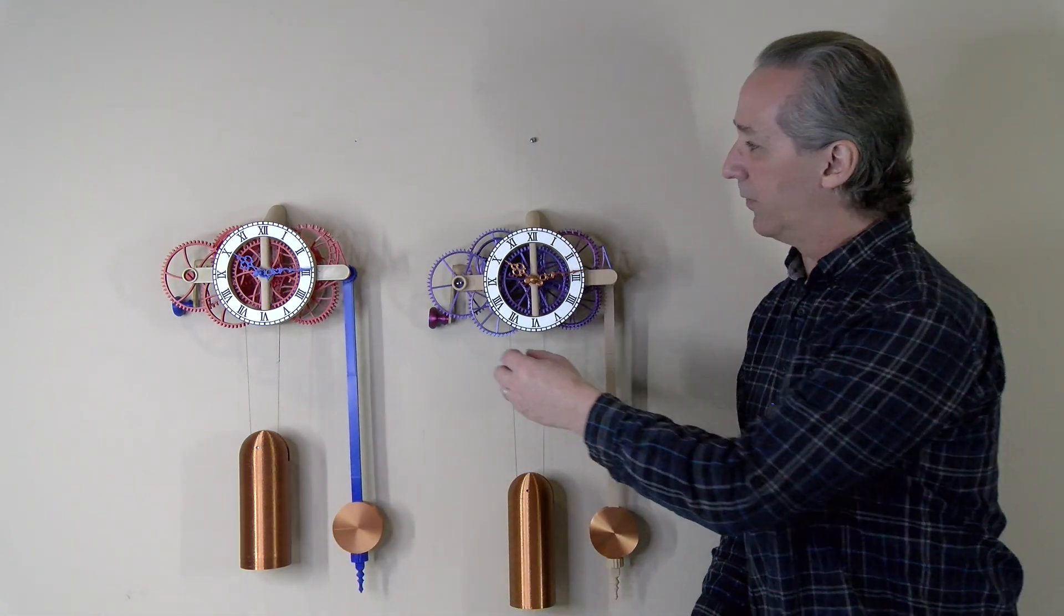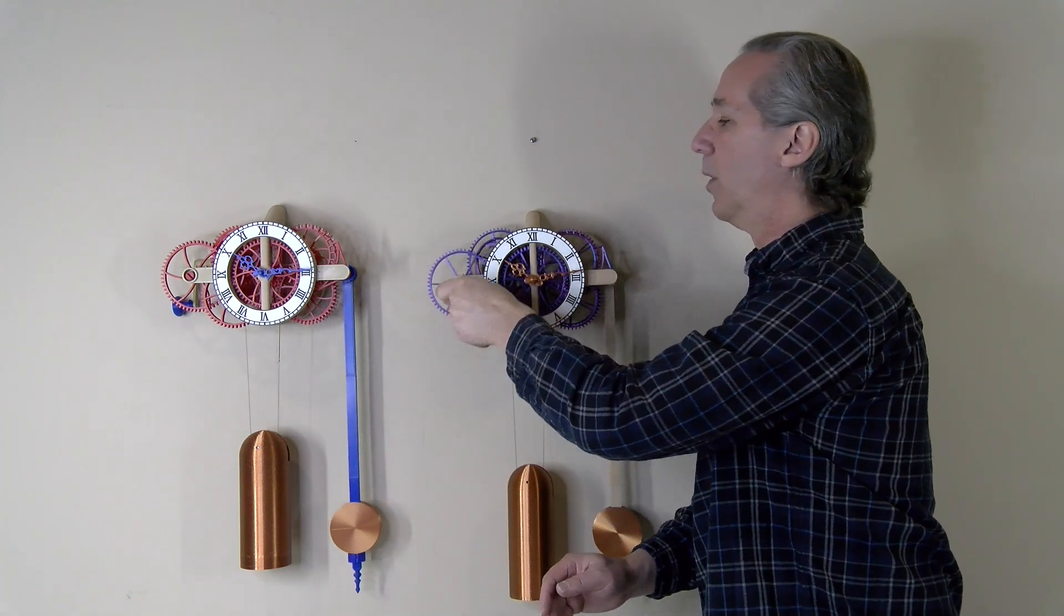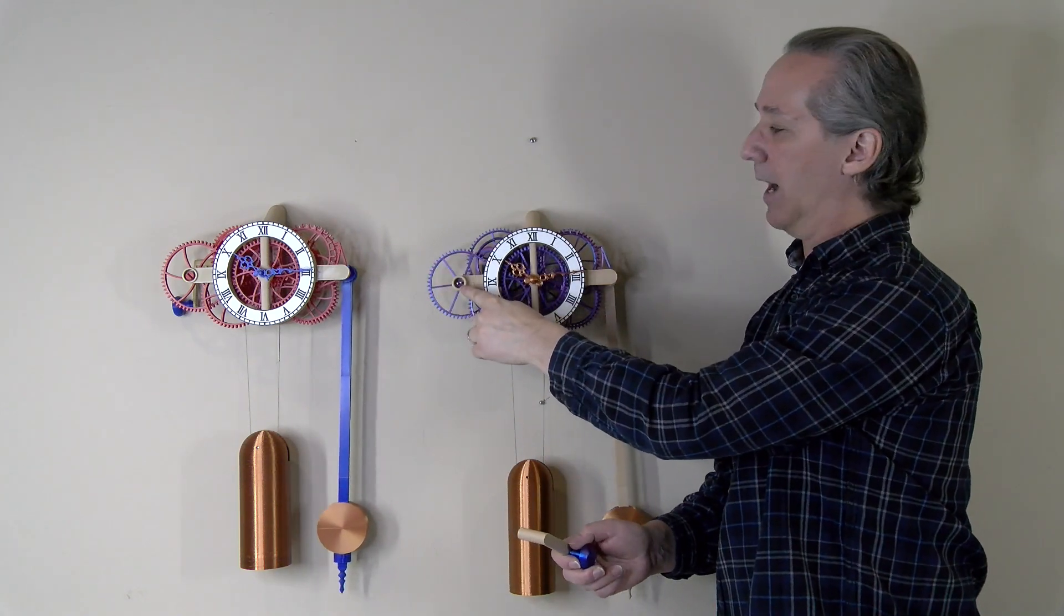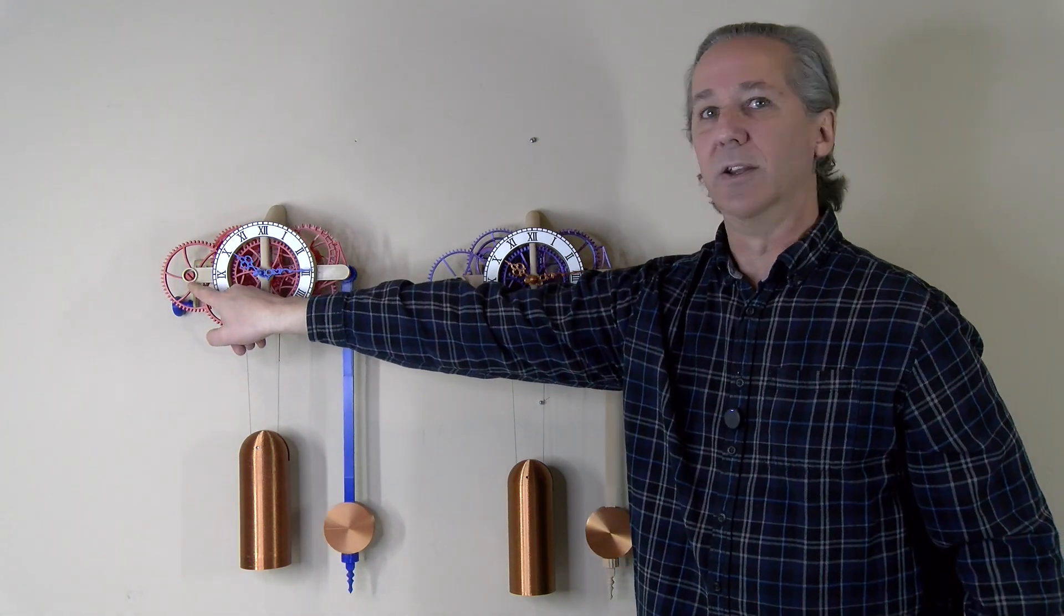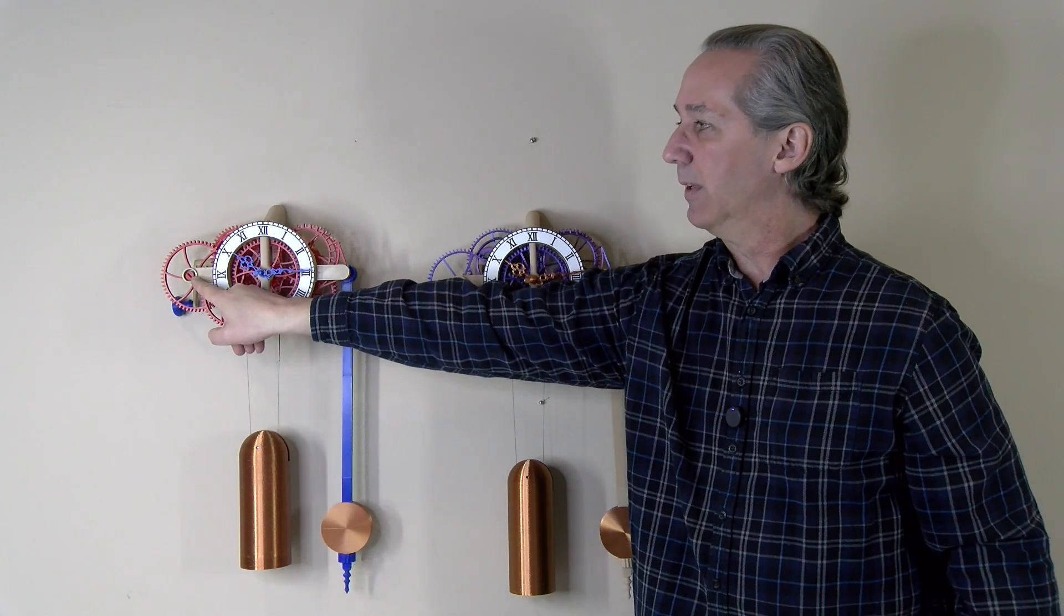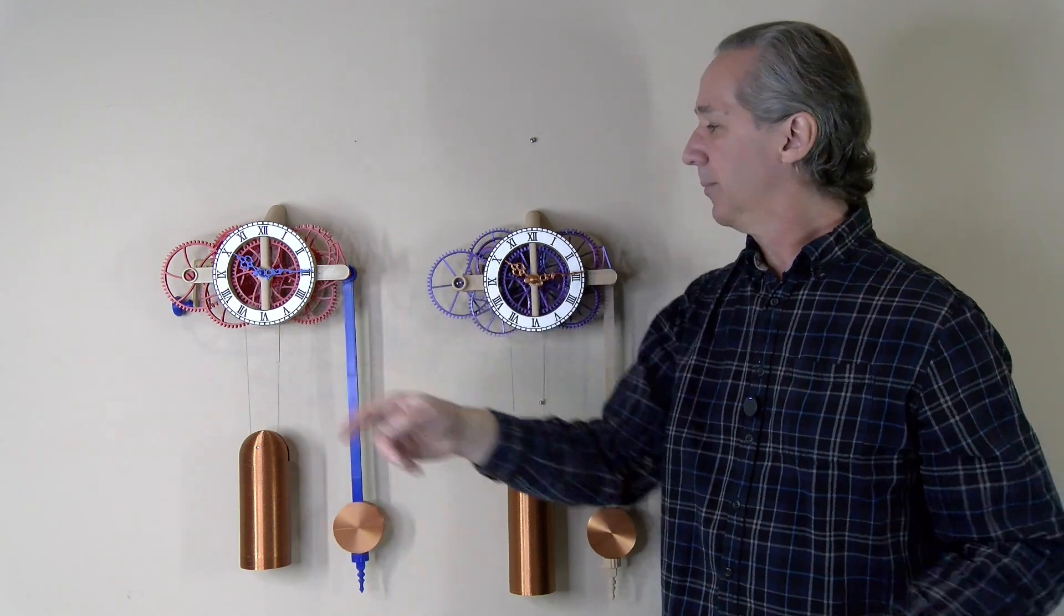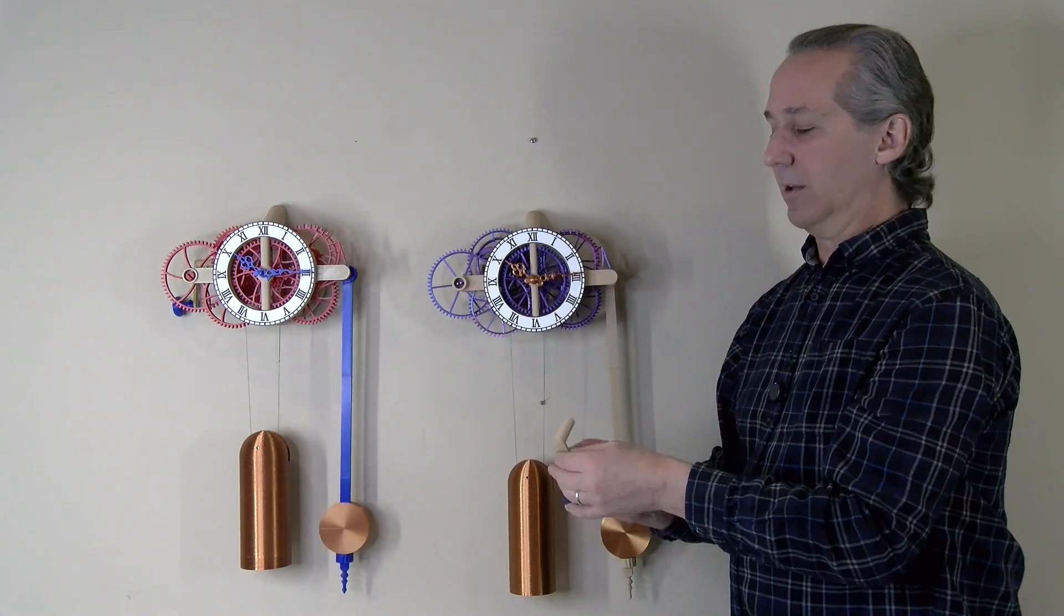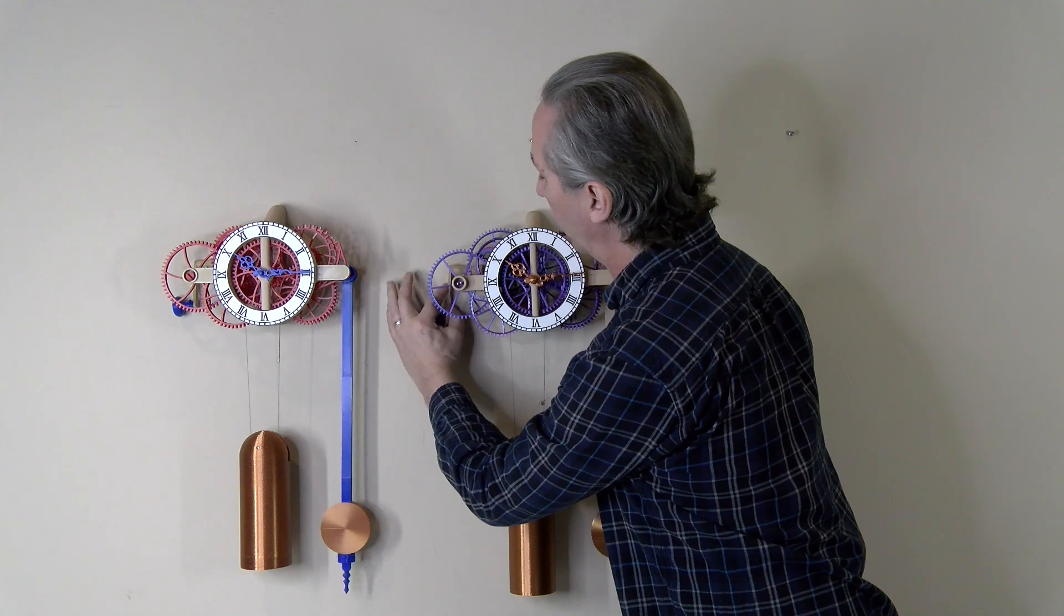The other significant change to this clock was a more reliable winding key that I borrowed from some of my other clocks. The original design uses 3D printed components that are a little bit fiddly and could be prone to breaking off. The new design uses metal rods, very solid and secure, makes the winding much more reliable.